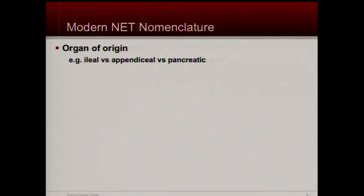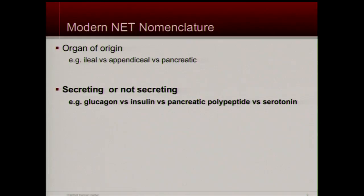What's modern in that nomenclature? We try to classify by the organ of origin, understanding that we don't always know where it came from. Sometimes we'll find spots in the liver and don't know where the primary tumor came from. But other times we'll find a primary tumor in the pancreas — a pancreatic neuroendocrine tumor — or a primary tumor in the appendix — an appendiceal neuroendocrine tumor.